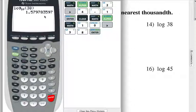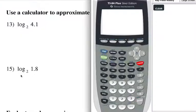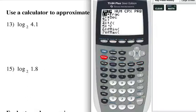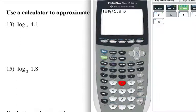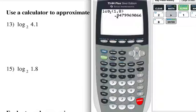Next. Log base 2 of 1.8. Let's get our log function back. Log base 2, and put a 1.8 there inside the parentheses. And what did you get? To the nearest thousandth, it's 0.8479. So, 0.850.